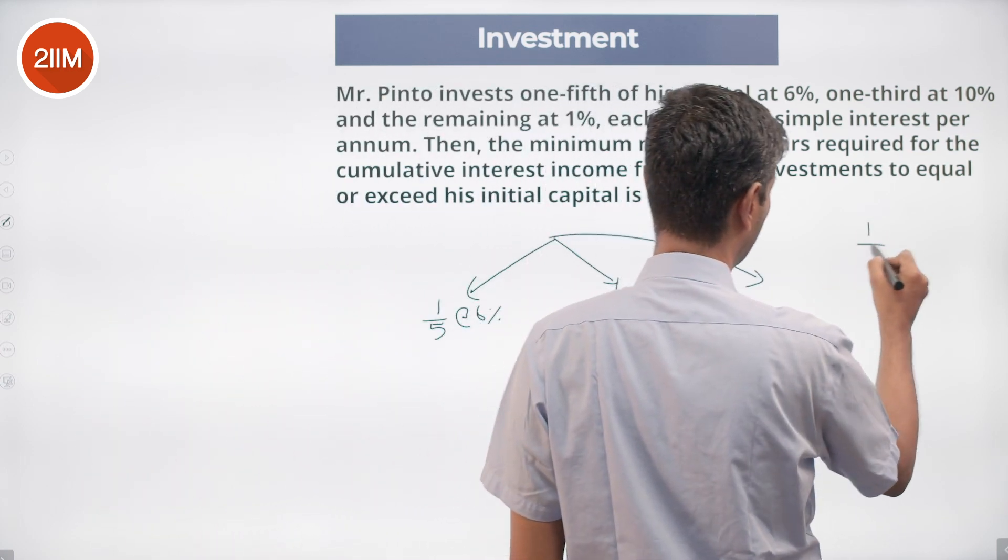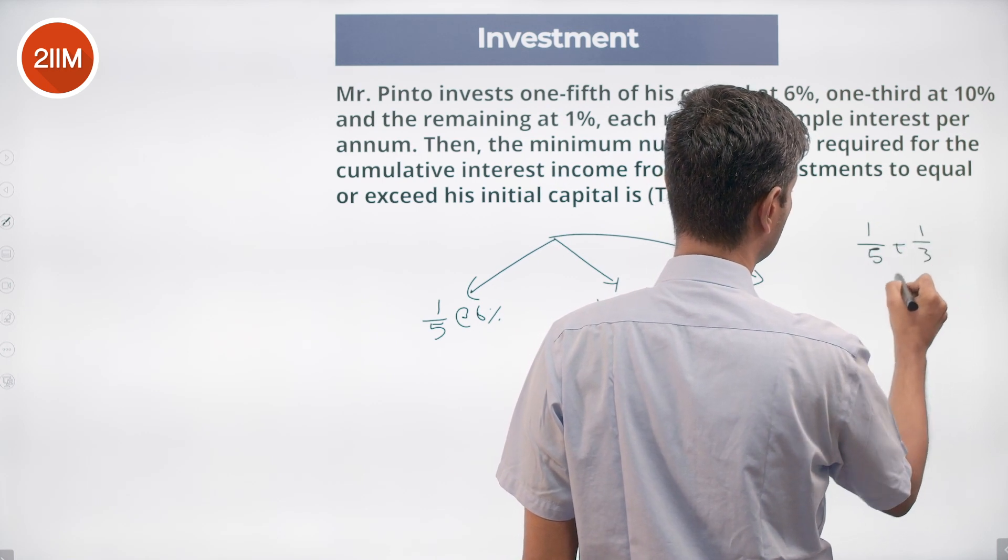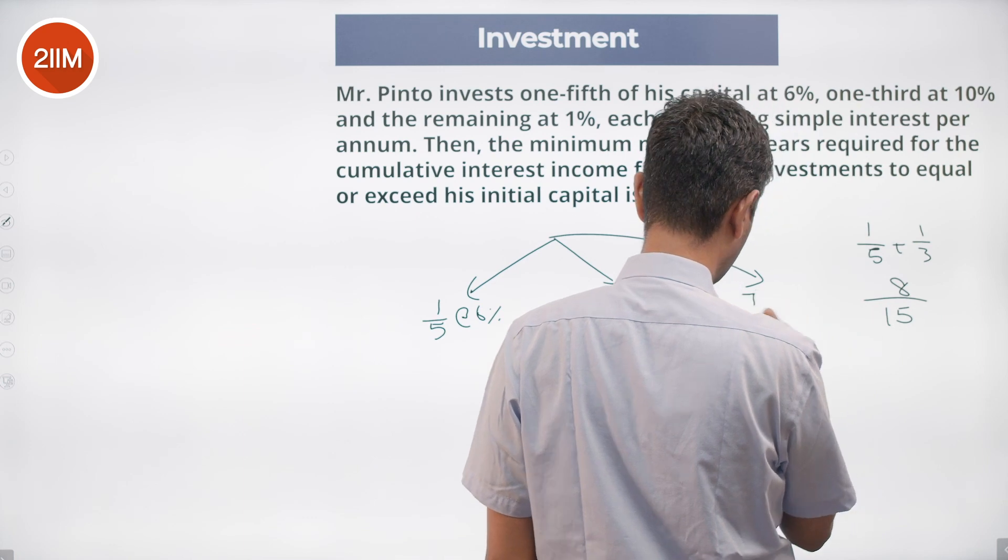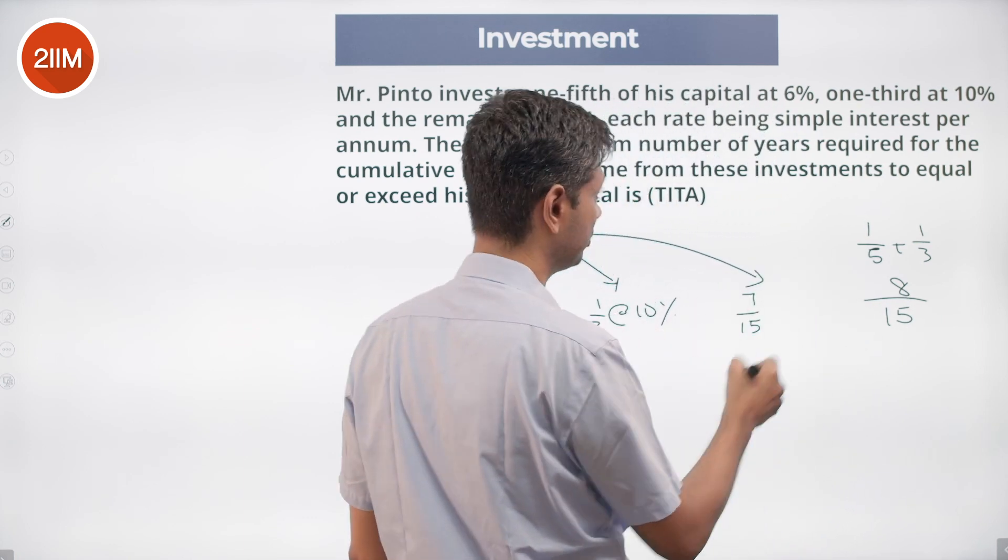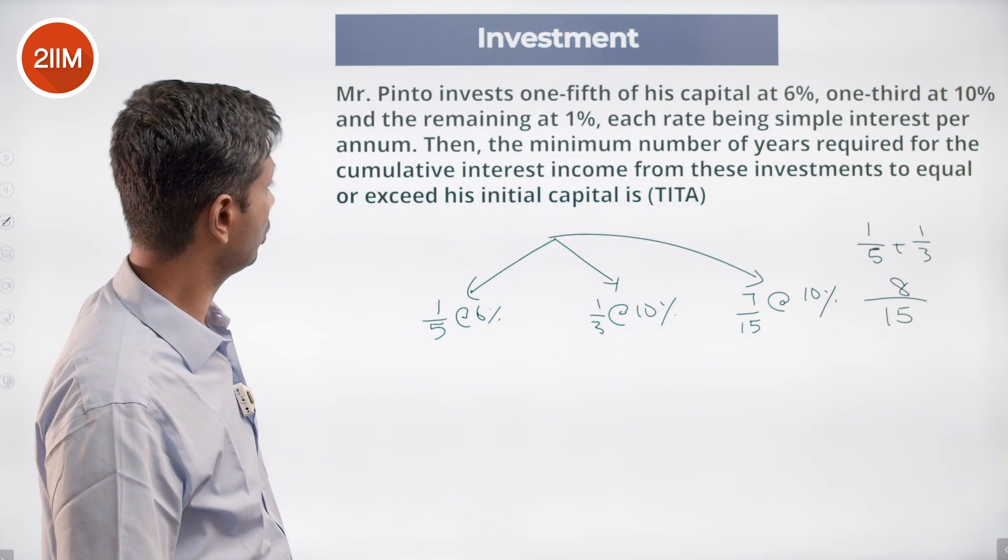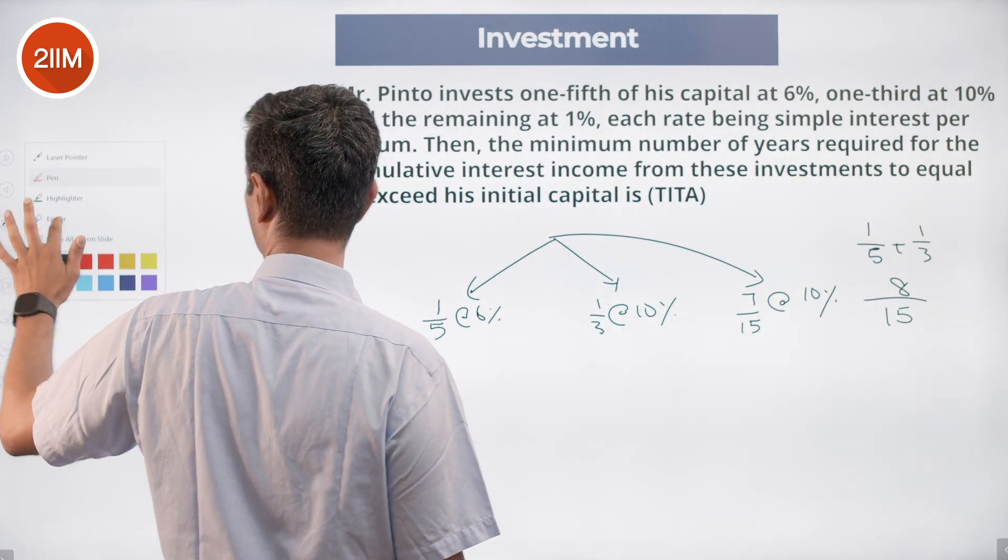The remaining is 1 by 5 plus 1 by 3, which is 3 plus 5, 8 by 15, so 7 by 15 remaining at 7 by 15 at 10 percent. Not 10 percent, 1 percent, sorry about that, I will fix that.